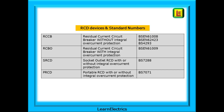RCBOs to BSEN 61009 will detect residual currents and overloads of current. They have an I-delta-N — a residual tripping current rating — and an overload current rating. So an RCBO can perform the functions of both an RCD and a circuit breaker. We also have standard numbers for socket outlet RCDs and portable versions that can be moved about and plugged in where needed.